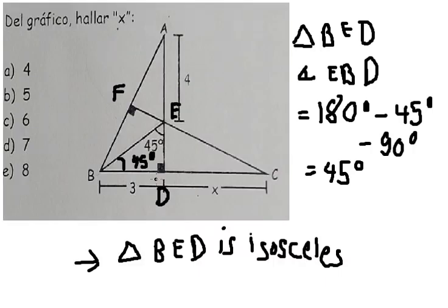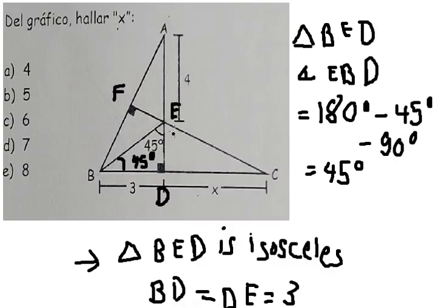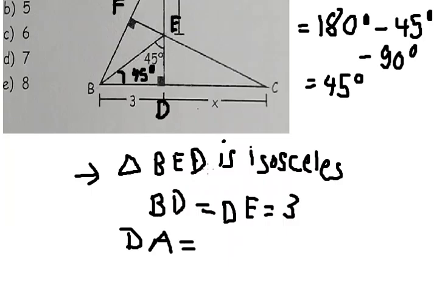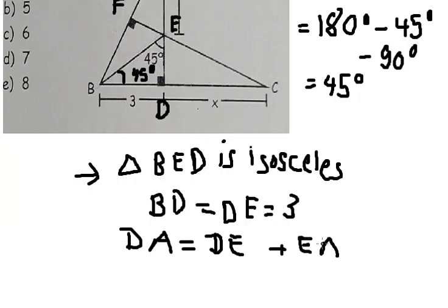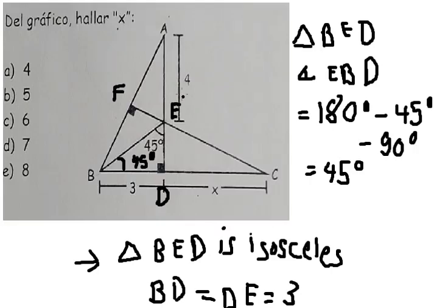That means BD equals DE, and that is about number 3. So DA equals DE plus EA.